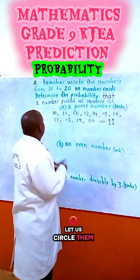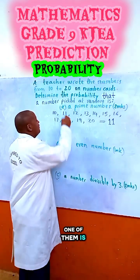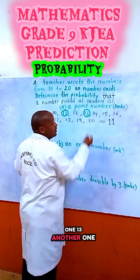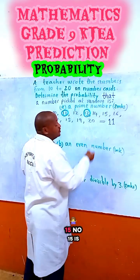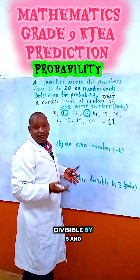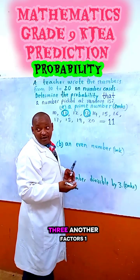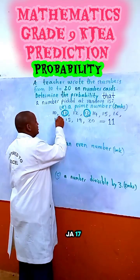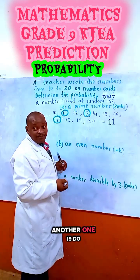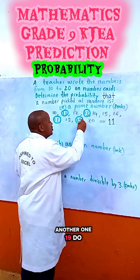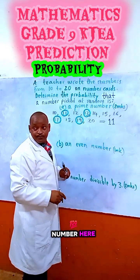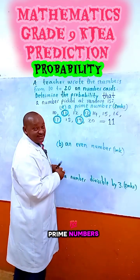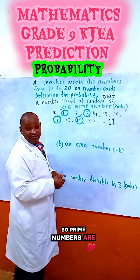Let us circle them. One of them is 11. Another one is 13. What about 15? No — 15 is divisible by 5 and 3, and has four factors. So 15 is not prime. Then 17 is prime. Another one is 19. So, we have 4 prime numbers.